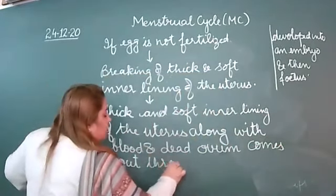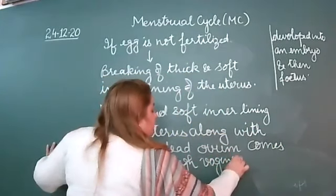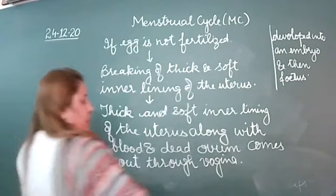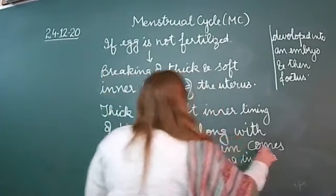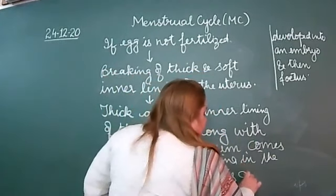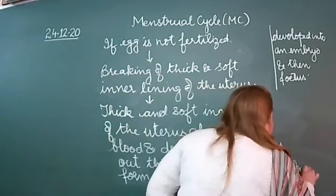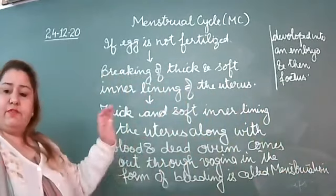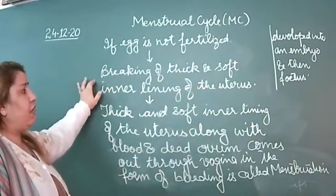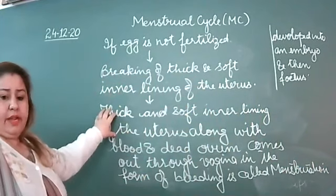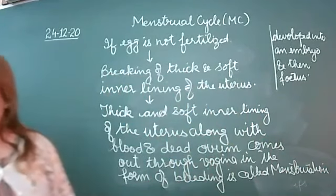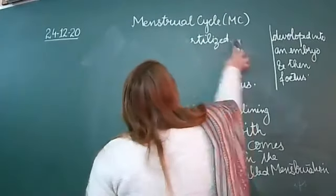It comes out through the vagina in the form of bleeding, and this is called menstruation. So to summarize: if the egg is fertilized, the menstrual cycle stops and the egg develops into an embryo. If the egg is not fertilized, then the breaking of the thick and soft inner lining of the uterus occurs and this lining, along with blood and dead ovum, comes out through the vagina as bleeding — that is called menstruation.